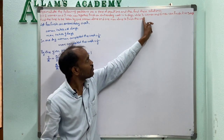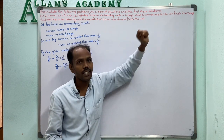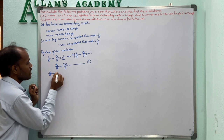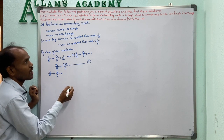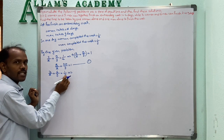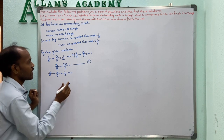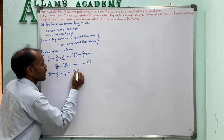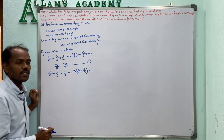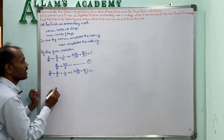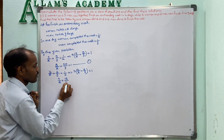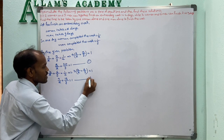Second condition: 3 women and 6 men complete the work in 3 days. In 1 day they complete 1/3. So 3/X plus 6/Y equals 1/3. Multiplying through by 3: 9/X plus 18/Y equals 1. This is equation 2.